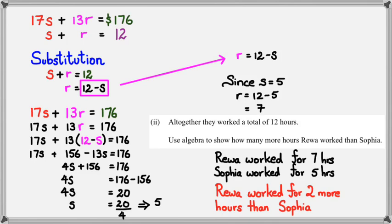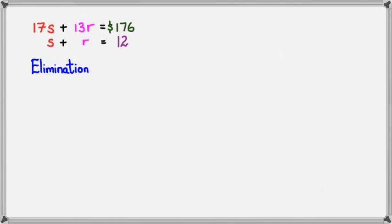Now I mentioned I'd also cover the elimination method. You don't need to do both methods — just use whichever one is easy for you. With the elimination method, we want to choose one variable to eliminate. I'm going to eliminate S, so I'm going to multiply the second equation by 17.